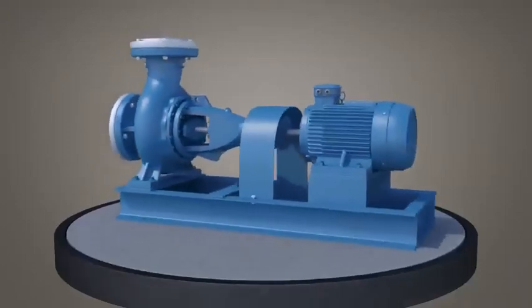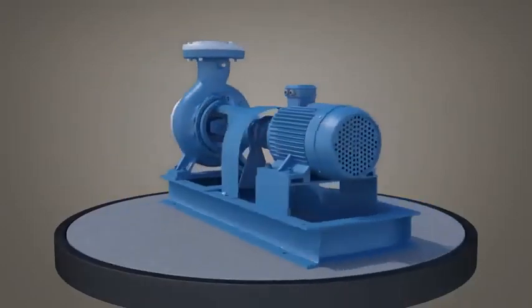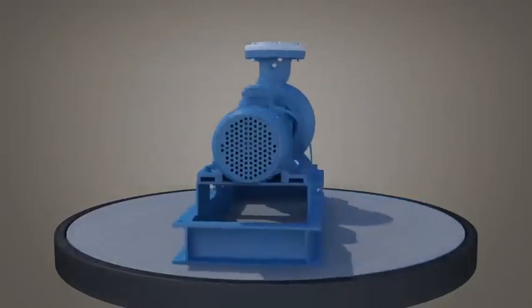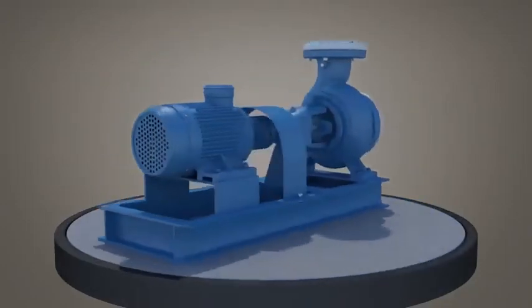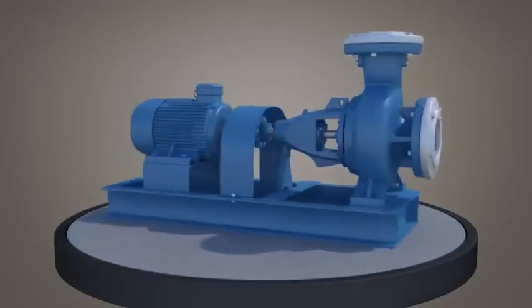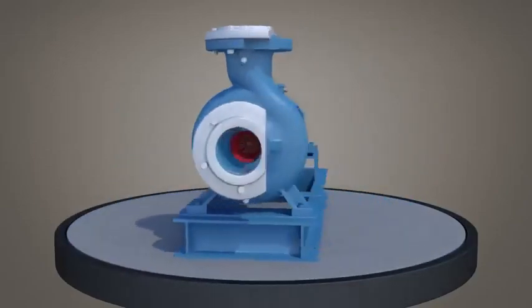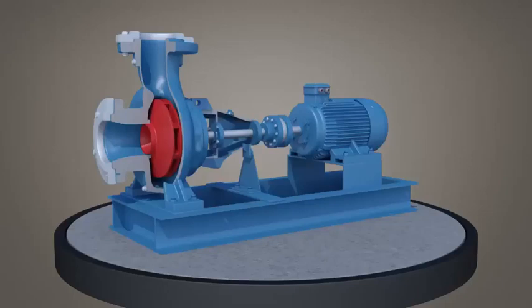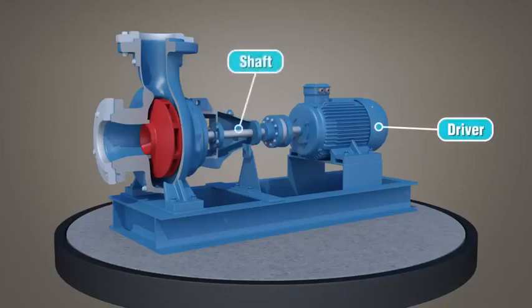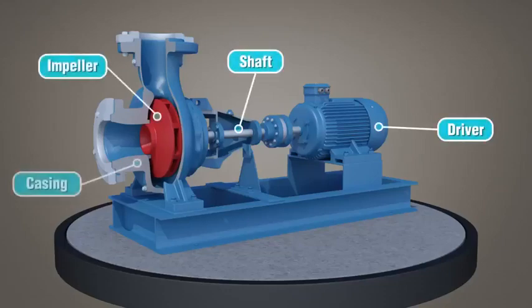A centrifugal pump converts power into pressure rise to transport liquids from one location to another via piping. A centrifugal pump consists of four main components: the driver, the shaft, the impeller, and the casing.